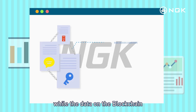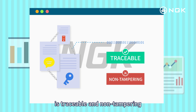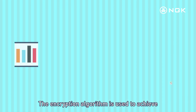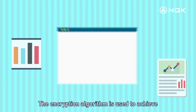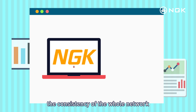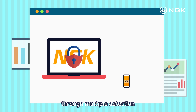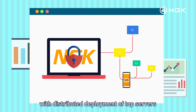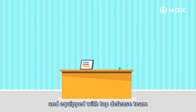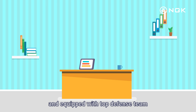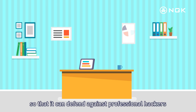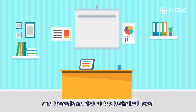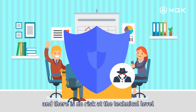The encryption algorithm is used to achieve consistency across the whole network. Through multiple detections, the NGK app has reached A1 level across various conditions, with distributed deployment of top servers and a top defense team, so that it can defend against professional hackers. There is no risk at the technical level.